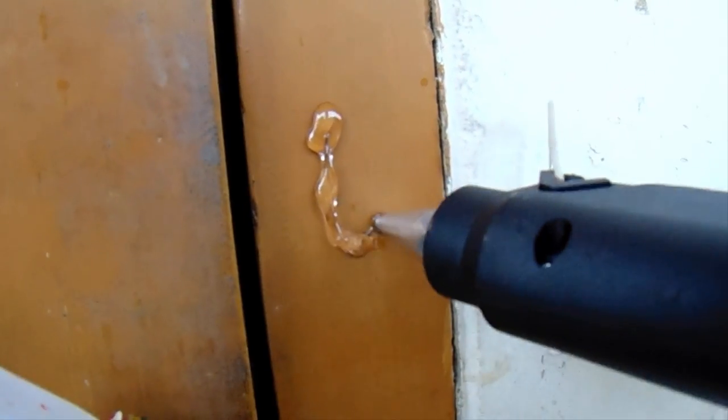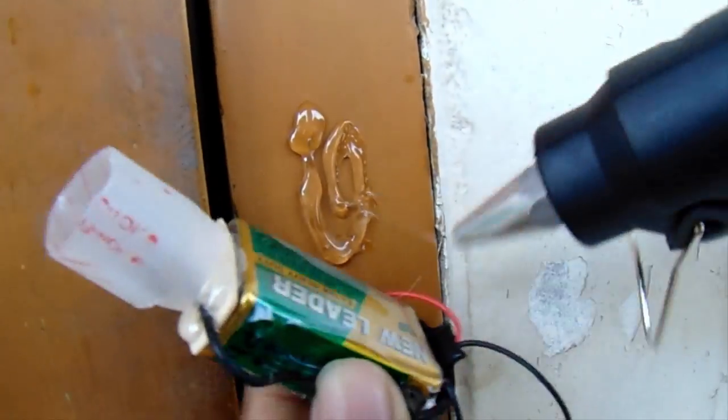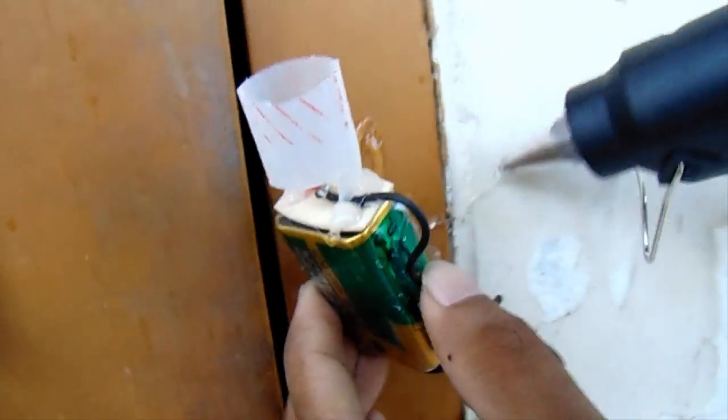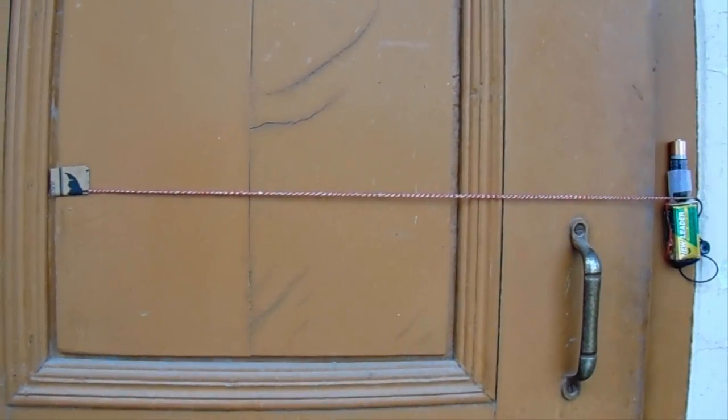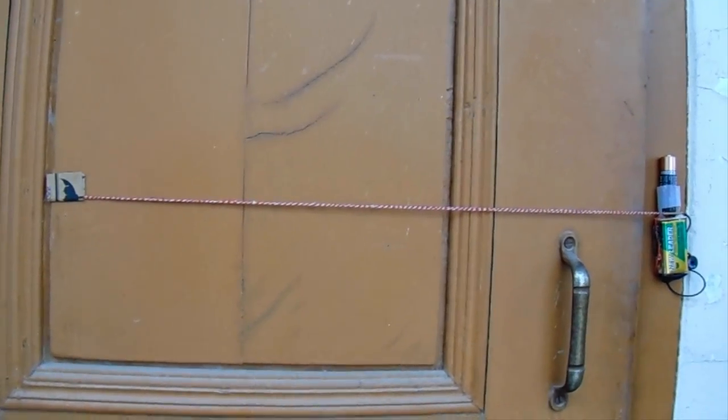Now attach the alarm circuit against the door. Arrange the cotton barricade against the door like this.